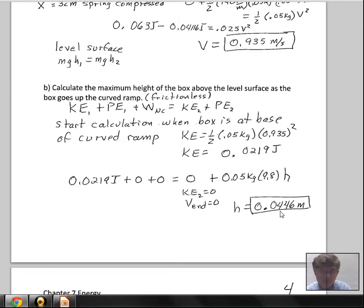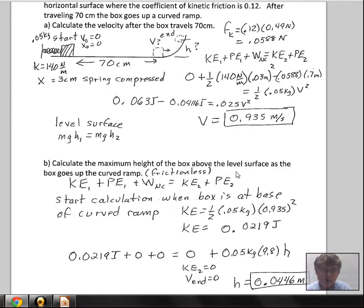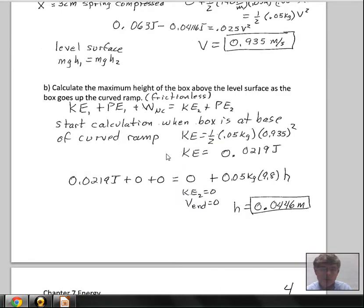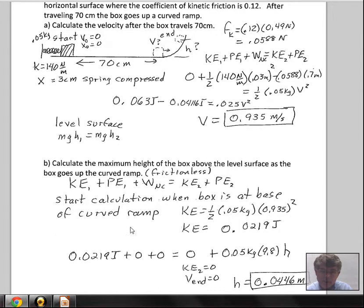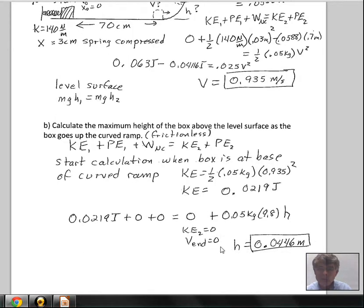About 4 and a half centimeters will be the height, maximum height of the box above this horizontal surface. At the time when the box comes to rest, zero velocity, it's given all of its kinetic energy it had here into potential energy at this maximum height above our horizontal surface. Using conservation of energy, accounting for the energy loss due to friction, we could calculate the velocity at the 70 centimeter mark. Making the problem have no friction here makes the second calculation easy. Conservation of energy, kinetic energy becomes potential energy. We get 0.0446 meters. You ought to confirm that by double checking all these calculations.